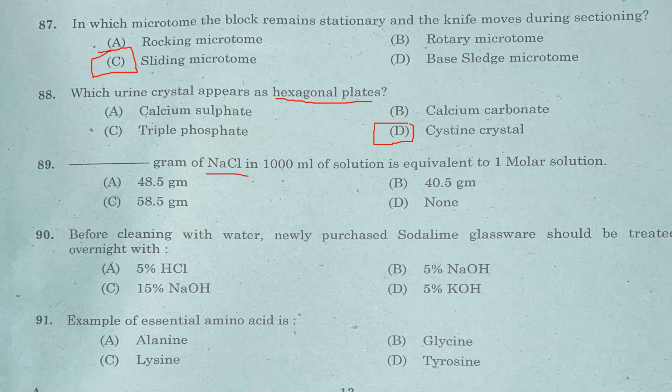Question 89: How many grams of sodium chloride in 1000 ml of solution is equivalent to a 1 molar solution? Option A: 48.5 grams. Option B: 40.5 grams. Option C: 58.5 grams. Option D: none. Answer is Option C, 58.5 grams.